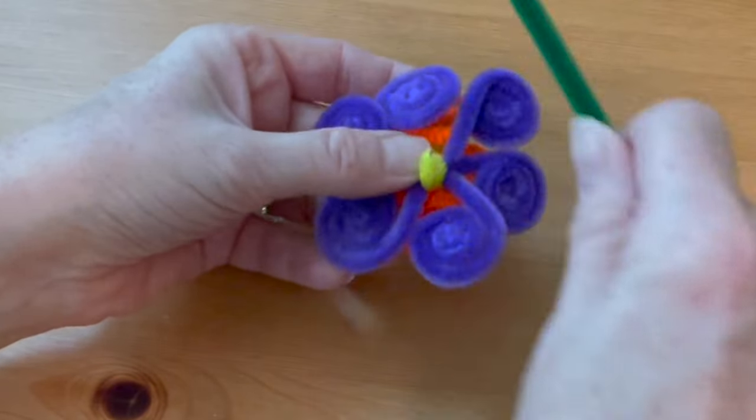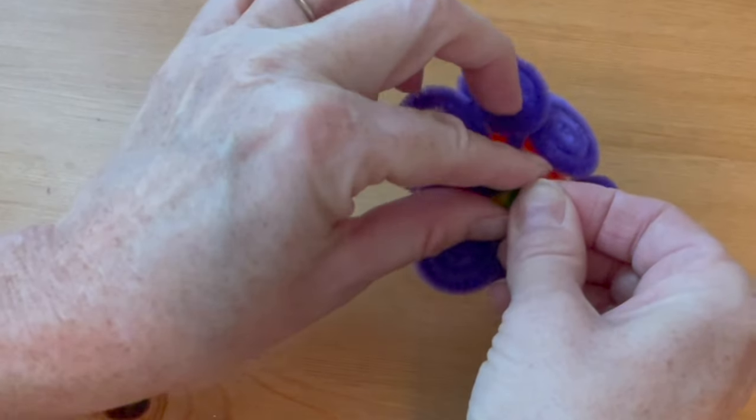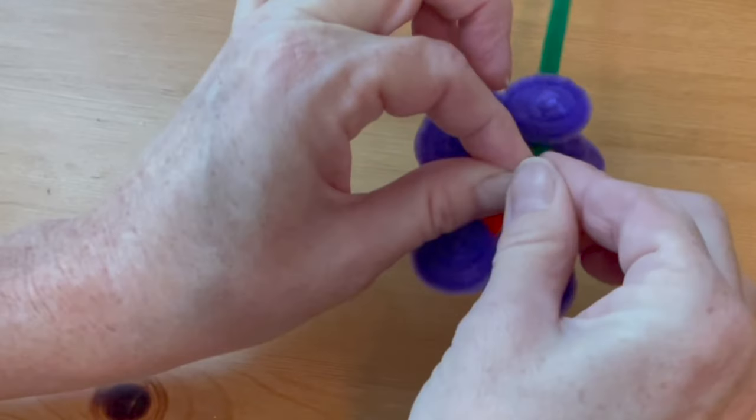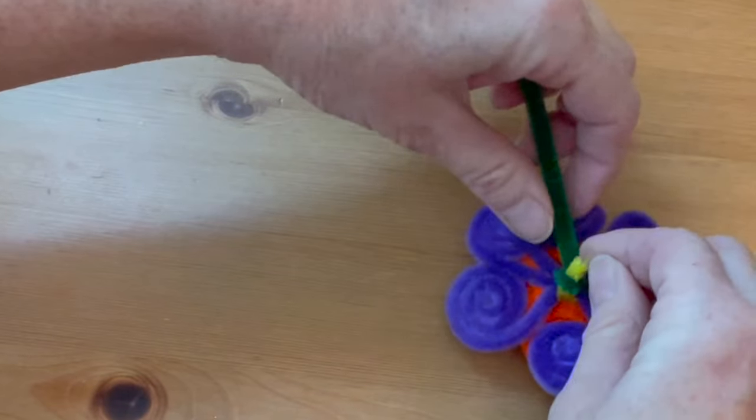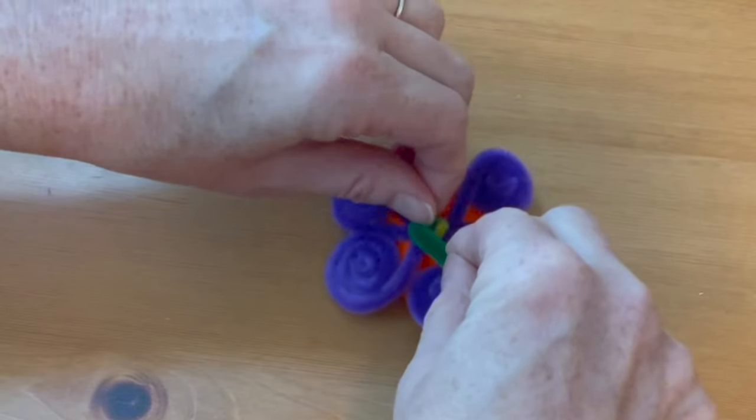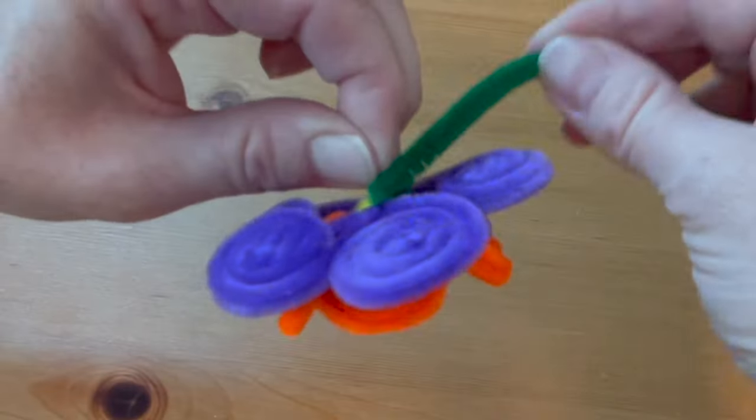Take your green pipe cleaner and wrap the very end around the base of the flower, around that little yellow tail that is sticking out. This part's a little bit tricky, but just pinch it down best you can and then wrap the pipe cleaner around two or three times just to make sure it's securely fastened.